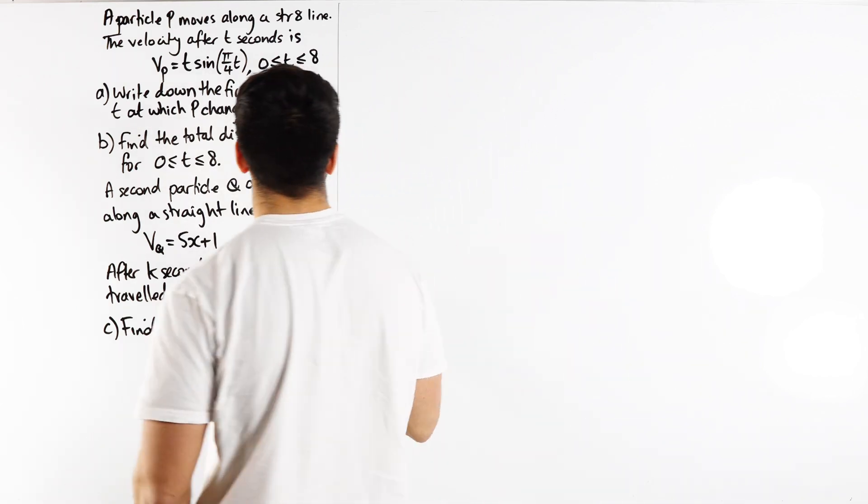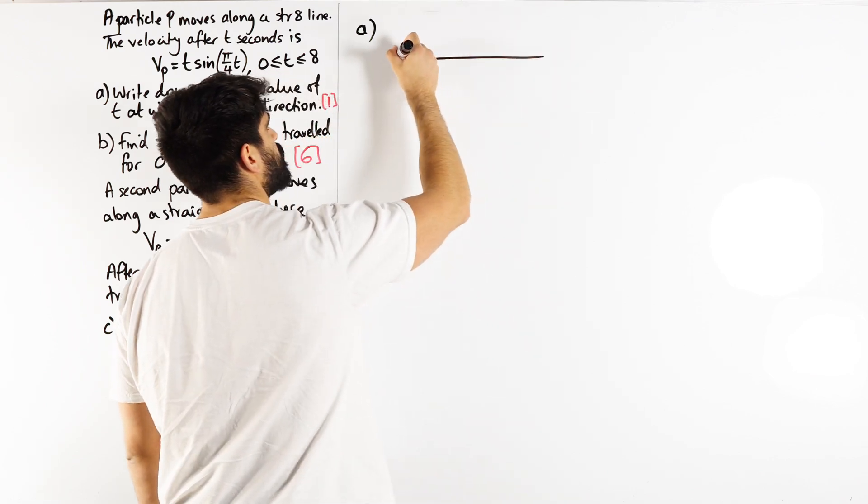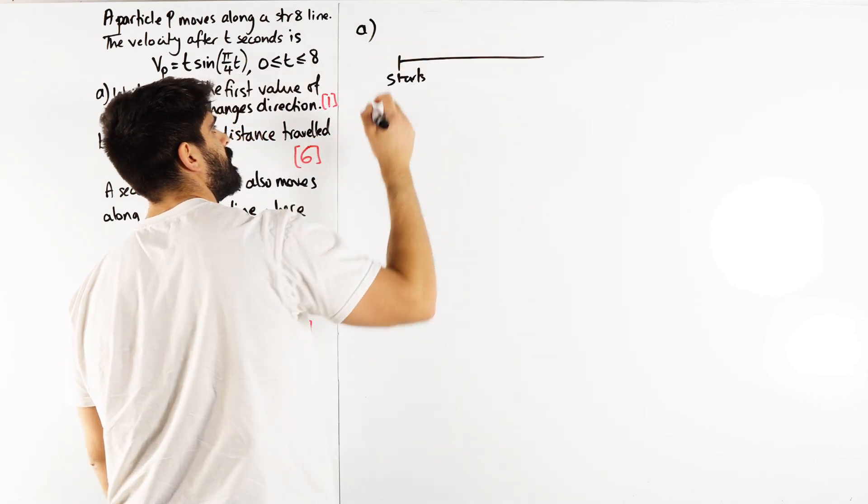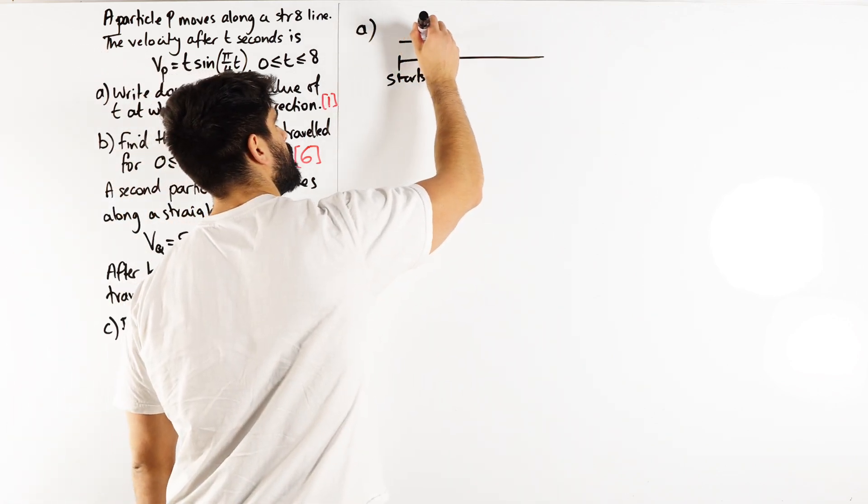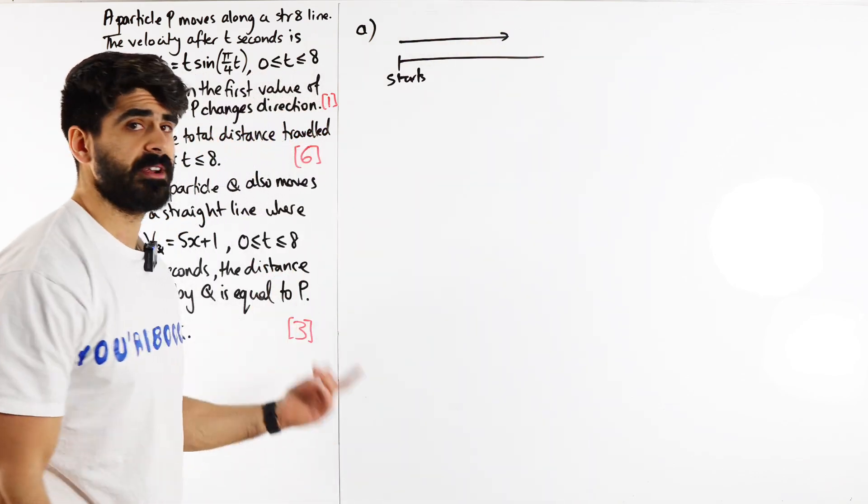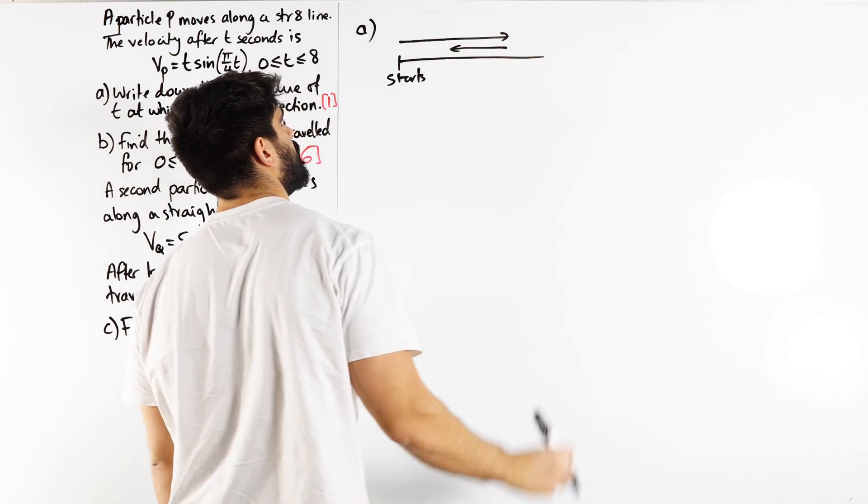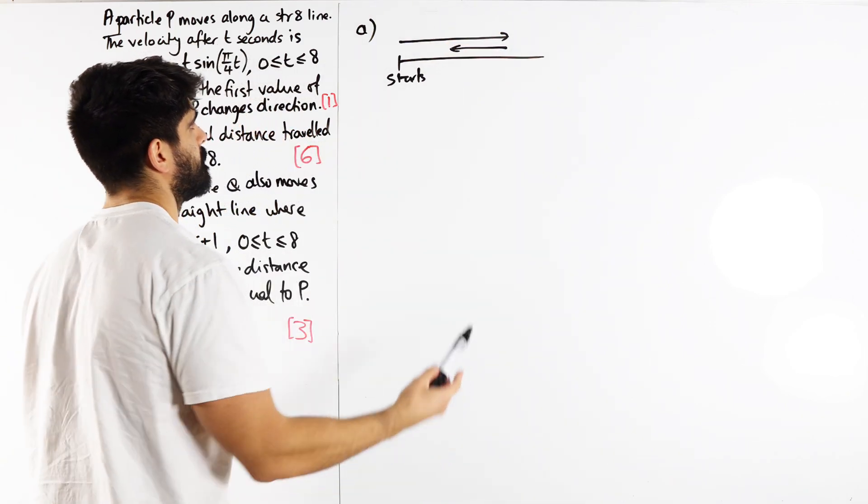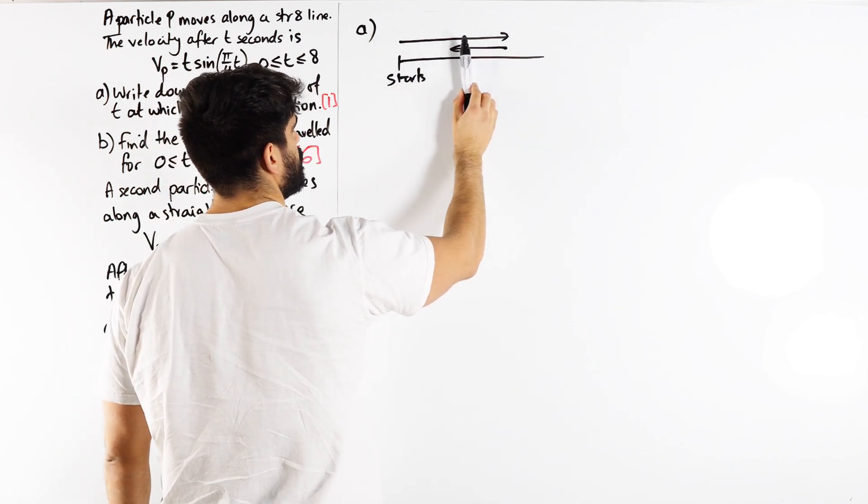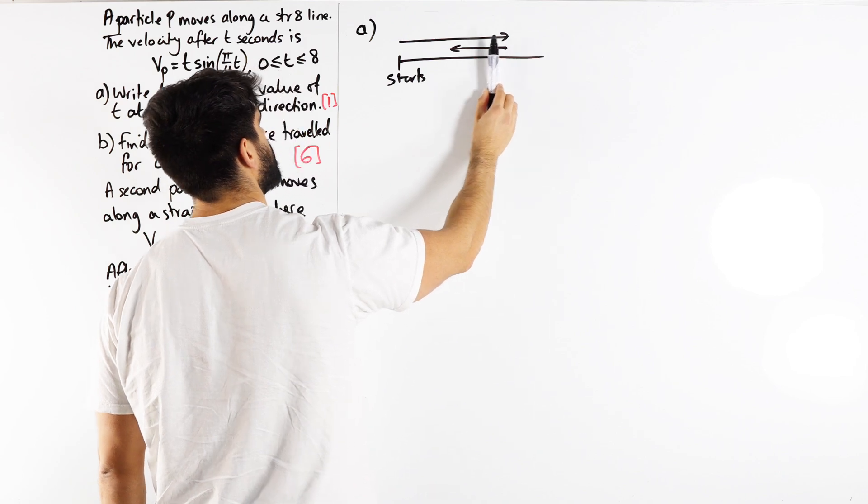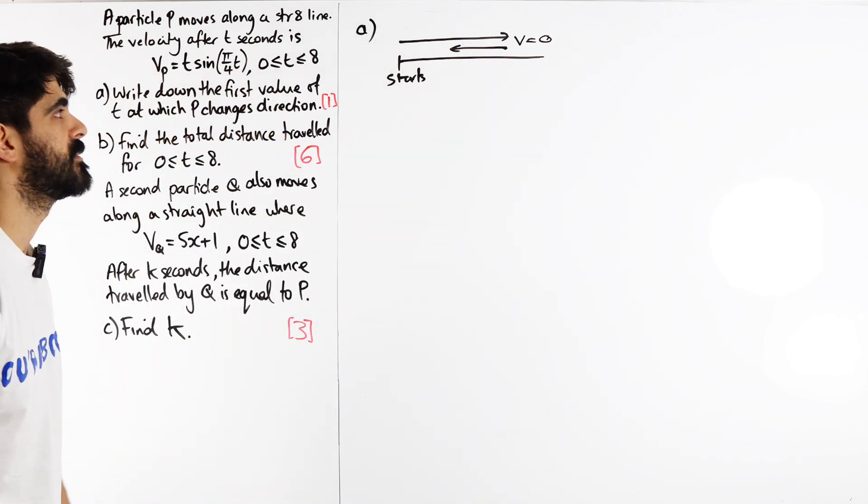How do we calculate when an object changes direction? Imagine the particle starts here and is moving to the right. For it to change direction, it would have to be pointing back towards the left. What must have happened in that time? It's moving forward, then moving backwards. We moved, we stopped, we came back.